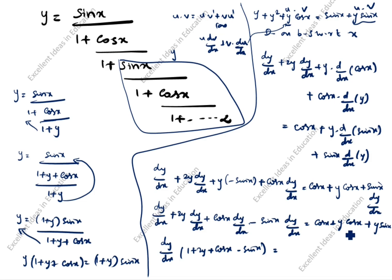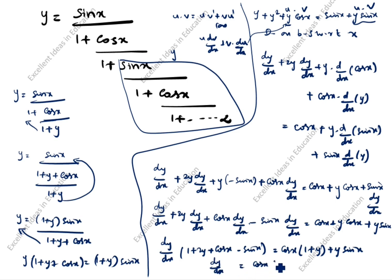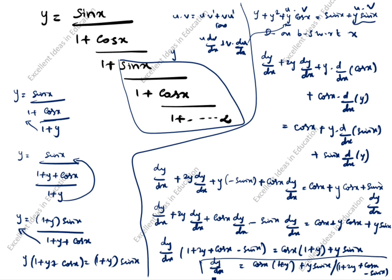So cos x is common on the right side: cos x times (1 + y + y·sin x). Therefore dy/dx equals cos x(1 + y + y·sin x) divided by (1 + 2y + cos x - sin x). This is the answer for dy/dx. We will now see the next question.